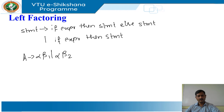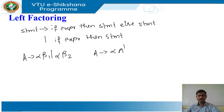However, we may defer the decision by expanding A to alpha A'. Then after seeing the input derived from alpha, we expand A' to beta1 or beta2. That is, the left-factored original production becomes: A derives alpha A', A' derives beta1 | beta2.